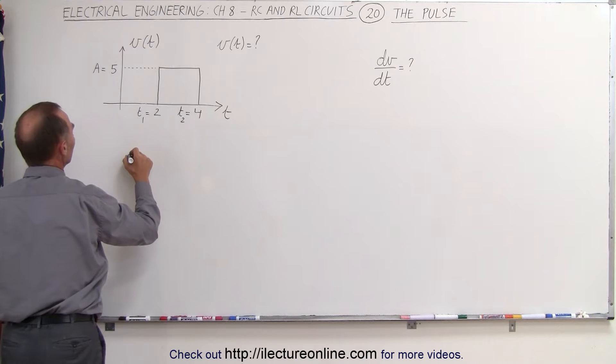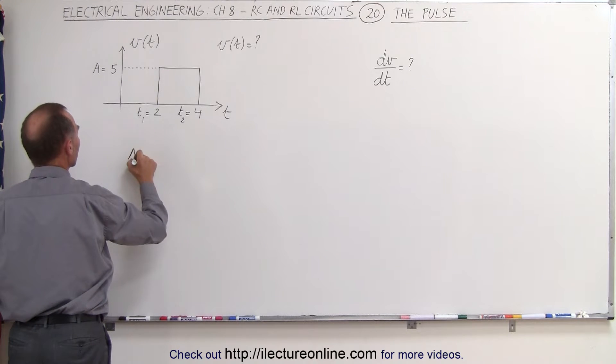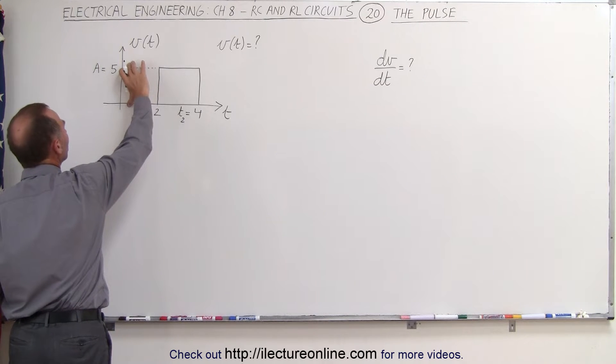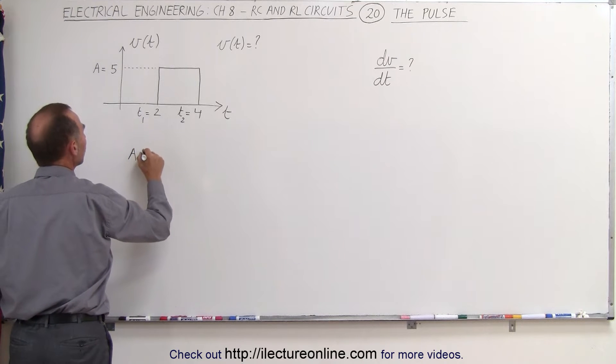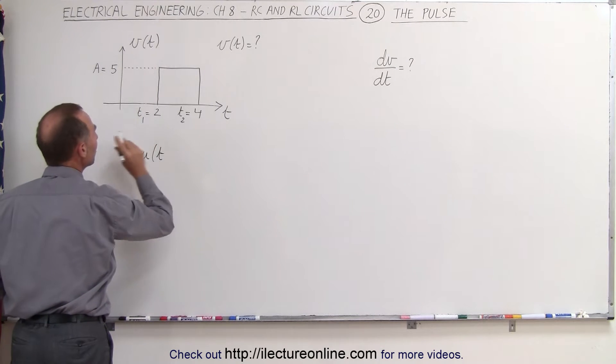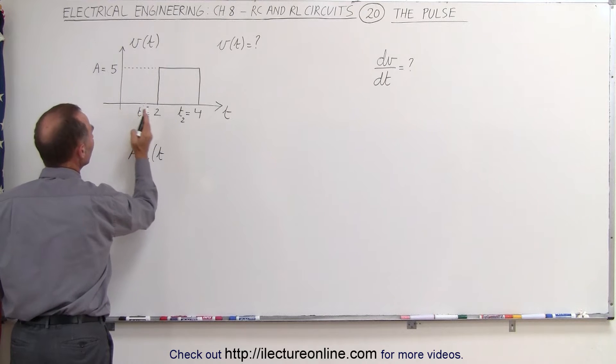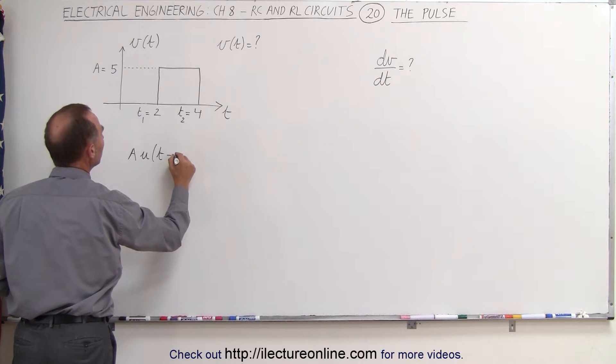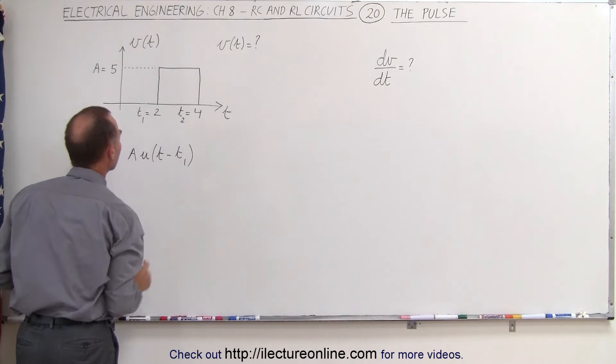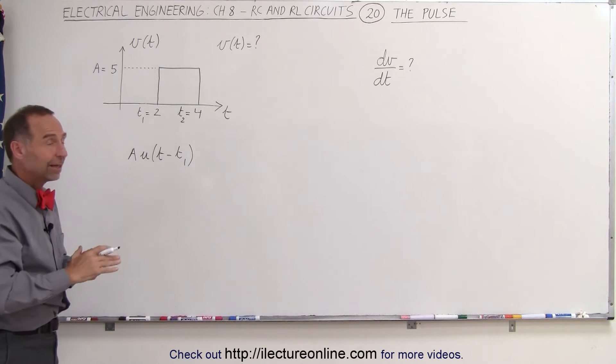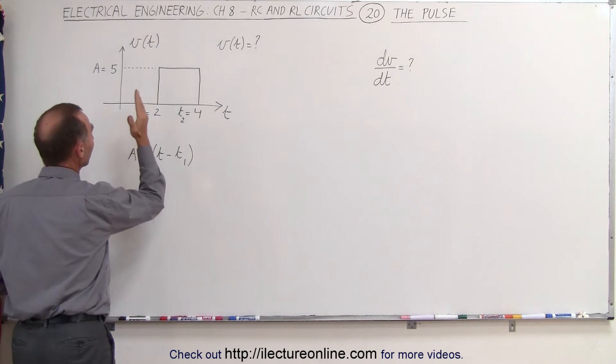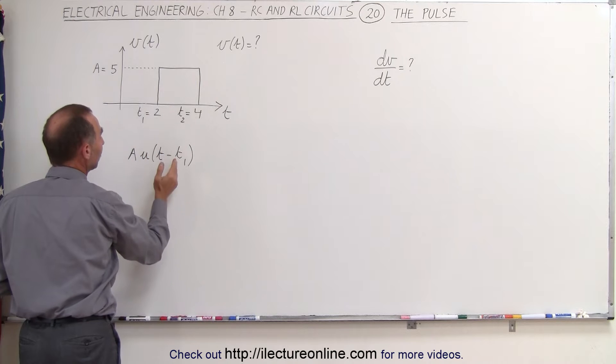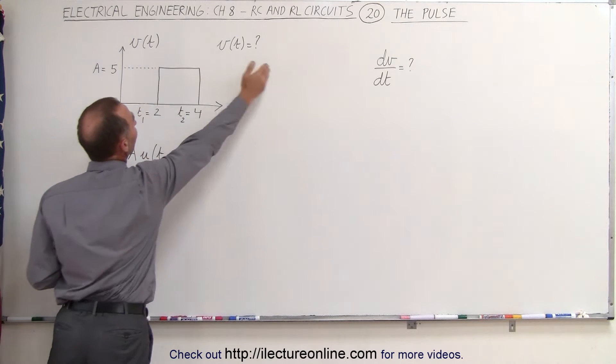We can then say that this would be the amplitude, because the amplitude is greater than one, so it's five times. So it would be A times the unit step function which is being shifted from time equals zero to time equals two, and this would be t minus t sub one. Now this would represent an impulse that starts at t equals t sub one, in this case two seconds, and remains there forever.